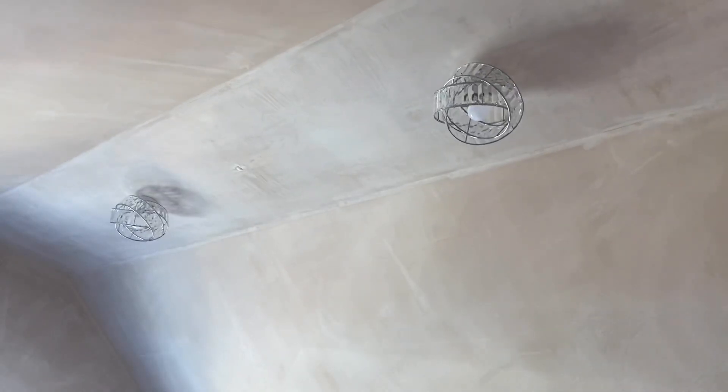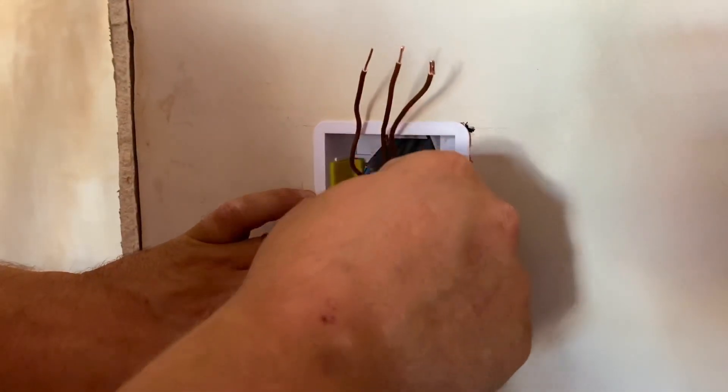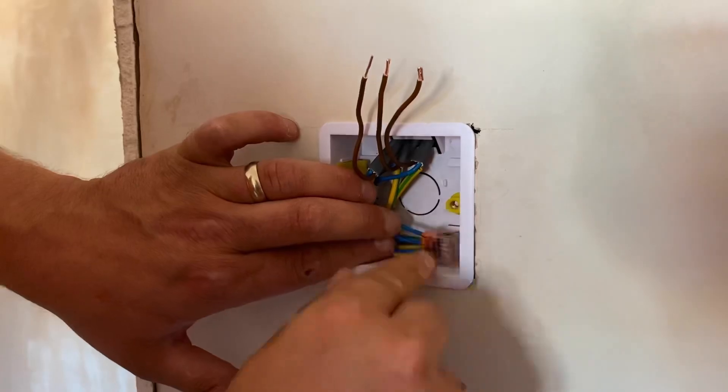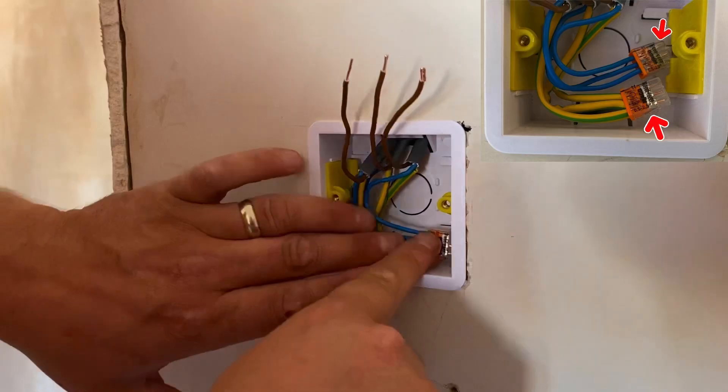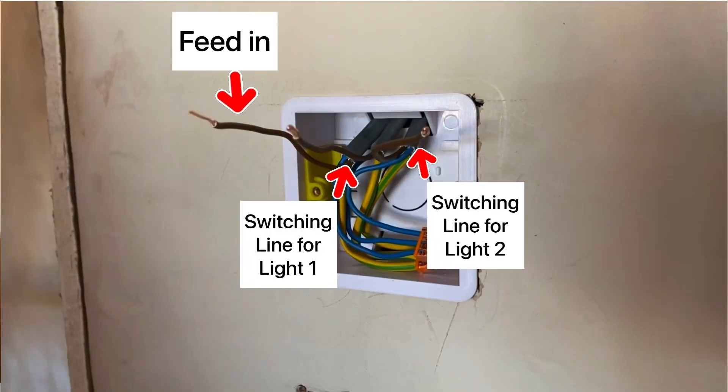So as you can see, we've actually got all of our neutrals together, which we just put into a Wago there, along with our CPCs. And that leaves us with a permanent feed and two switching feeds. Now what we're going to do, we're going to take the permanent feed into our common.